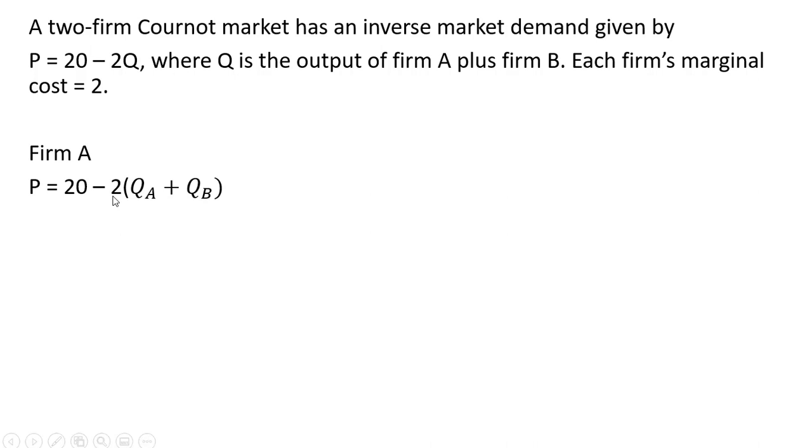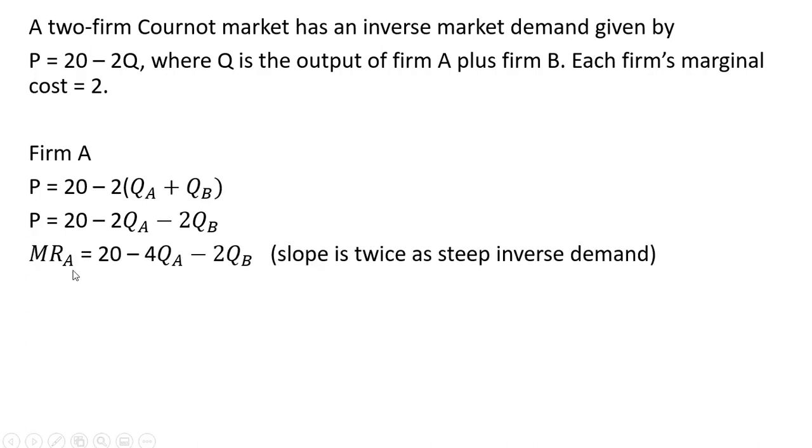So for Firm A, we have the inverse market demand. For Q, I'm substituting in Firm A's output plus Firm B's output. I'm going to simplify a little bit, and then we're going to get marginal revenue for Firm A. Marginal revenue is simply the price equation with a slope that is twice as steep.